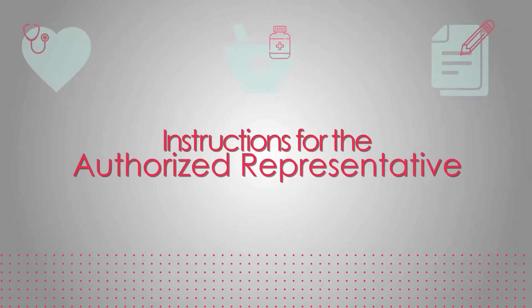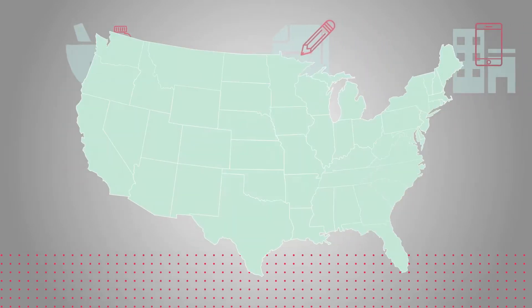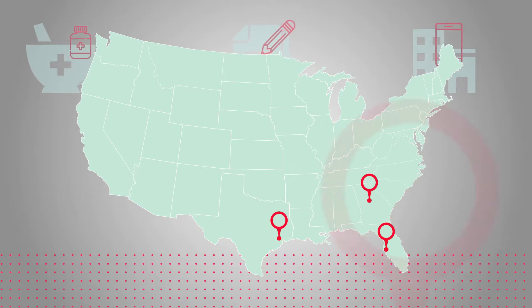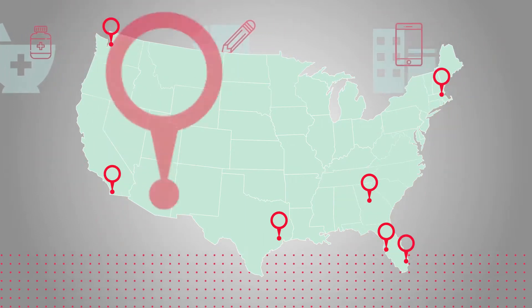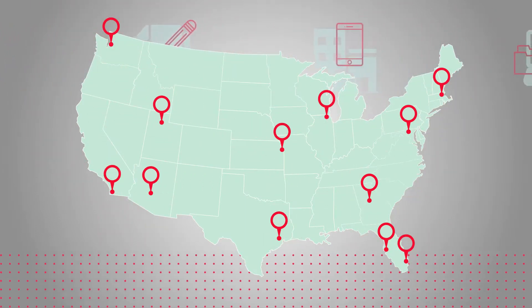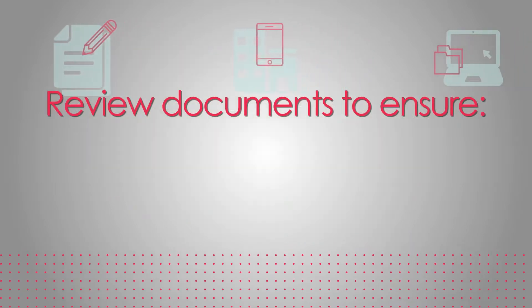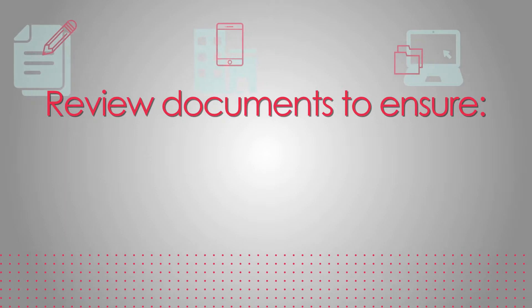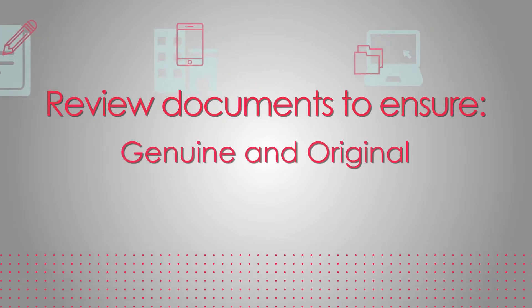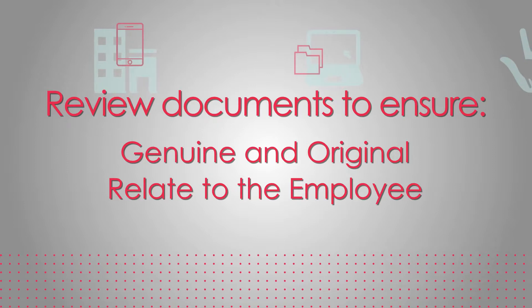Instructions for the Authorized Representative. As the chosen authorized representative for our company, you will be acting on our behalf as the employer. Our company has employees throughout the country, and it is not always feasible for them to come into our office to complete the Form I-9. Since our employee is located far away from our place of business, we rely on you to review the documents presented by our employee, determine that they appear to be genuine and original, and that they relate to the employee.